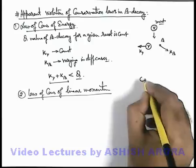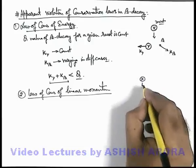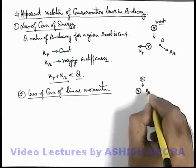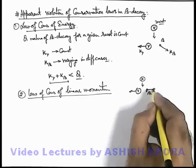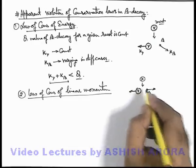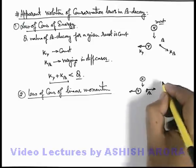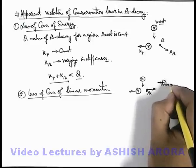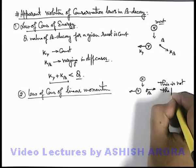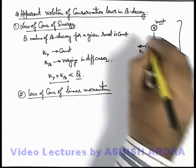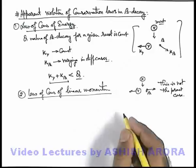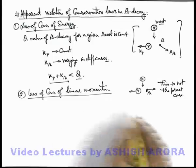So practically it should be X which transforms to Y and beta. Under ideal situation these two move away from each other in any direction such that the total momentum will remain zero. But this is not the practical case. Actually it happens like this, so we can say that linear momentum conservation will not be true over here.